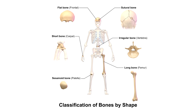Long bones are longer than they are wide and they have two ends and a shaft in the middle, which is also known as a diaphysis, and this is what contains the bone marrow. These rounded ends at the top of the long bones are called the epiphysis and they're covered with articular cartilage. The epiphysis is where we find the red bone marrow which is responsible for red blood cell production. Examples of long bones include most of the limb bones like the femur and the tibia.